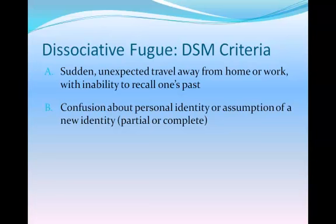Interestingly, whenever people do adopt a new identity in these cases — usually discovered at police stations or ERs — their new identity is usually more gregarious, outgoing, and less inhibited than their typical self. This might be telling in terms of what's going on: if somebody is living a very repressed, closed-off life and wants to be different but doesn't feel they can be, there might be a part of them, consciously or unconsciously, that seeks out this other self — the life of the party. People who are already outgoing don't run away and create a shy new identity.